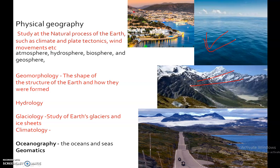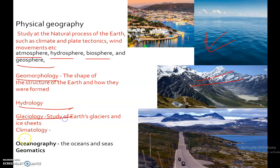Physical Geography is the branch of Natural Science which deals with the study of processes and patterns in the natural environment such as the atmosphere, hydrosphere, biosphere, and geosphere. Physical Geography was also conventionally subdivided into categories like geomorphology, hydrology, glaciology, climatology, and oceanography.